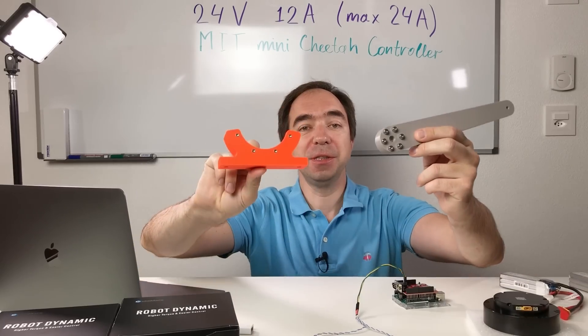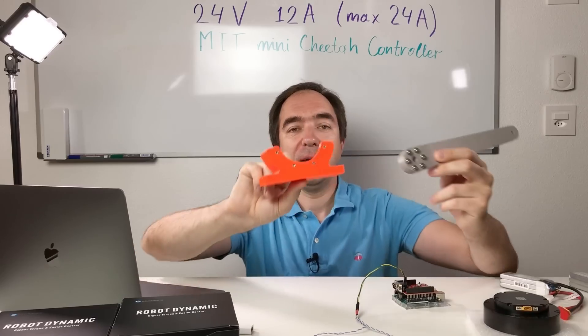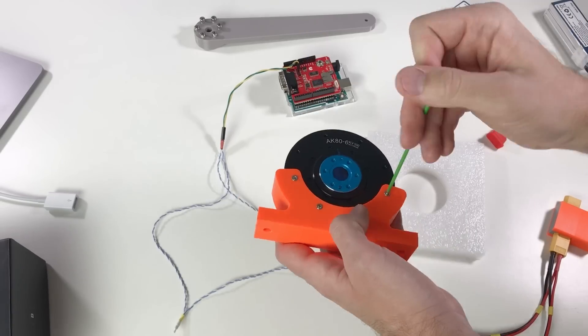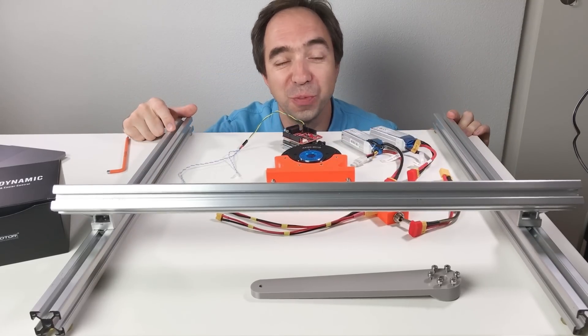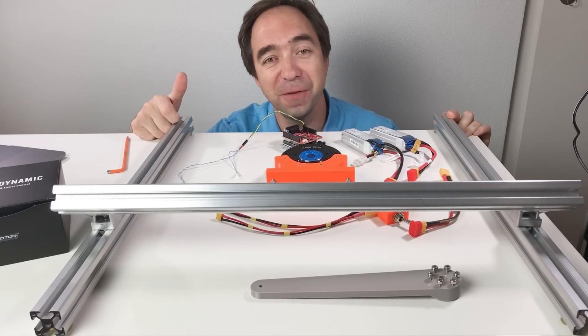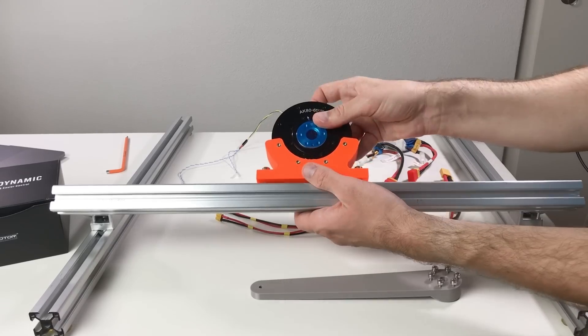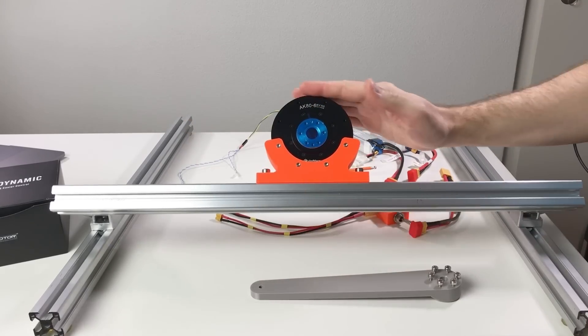I also 3D printed these two pieces, the arm and the holder for the actuator. I've made this support from aluminum profiles. I think it should be solid enough for our actuators. Beautiful!